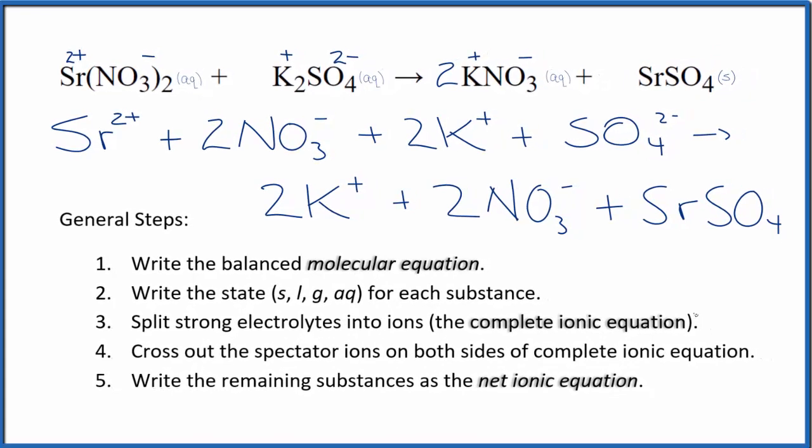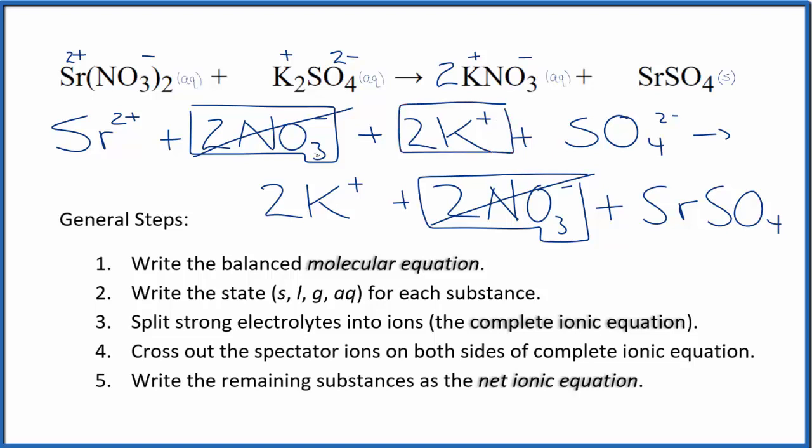And this is the complete ionic equation. So now we can cross out spectator ions. They're on both sides of the complete ionic equation. So when I look at the reactants here and the products, I can see in the reactants I have two nitrate ions. In the products, I also have two nitrate ions. These are spectator ions. We'll cross those out. Reactants, two potassium ions. And in the products, two potassium ions. Spectator ions, we cross them out.